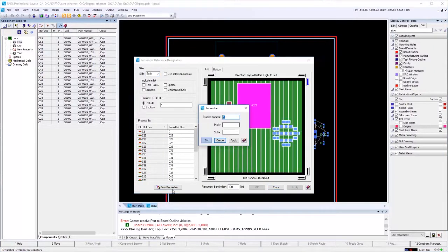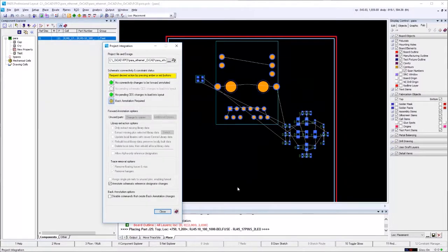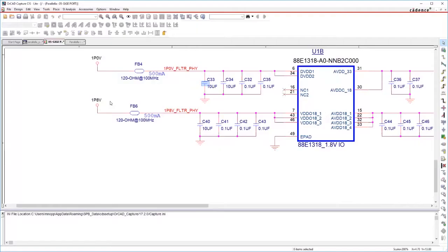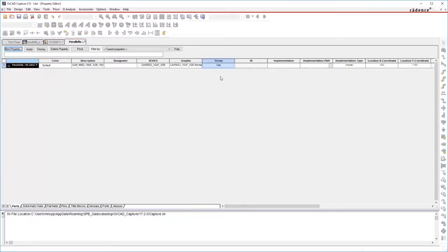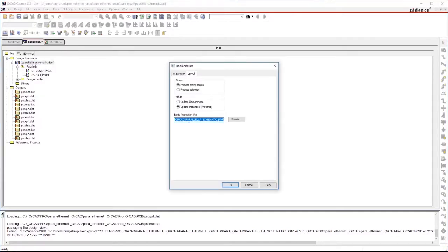Now with the components placed, let's automatically renumber the reference designators. Then run backward annotation. Before we sync the ORCAD interface, notice this capacitor has the group property CAP. The property was forward annotated to layout to drive the placement group in layout. To sync the design, go to Tools, Back Annotate. And notice the reference designators update.